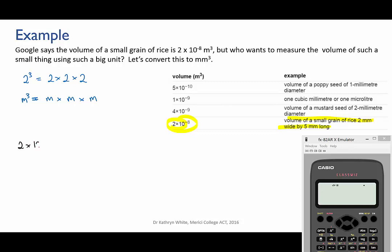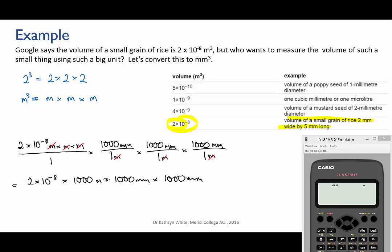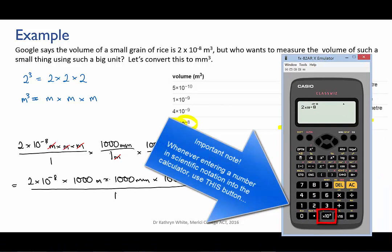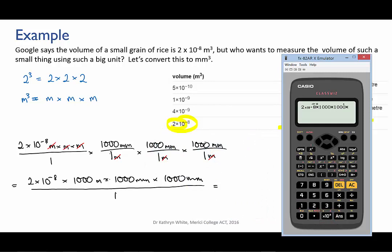So what we need to do here is to convert meters to millimeters 3 times over, one for each of those 3 meter units. So we just run through those conversions one after the other. Like this. And we find that the volume of a small grain of rice is about 20 cubic millimeters.